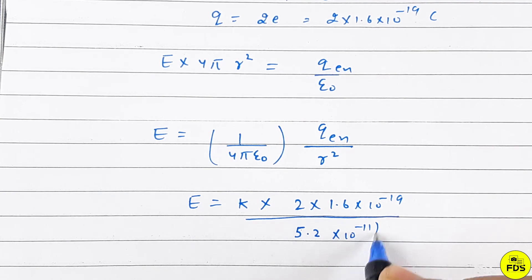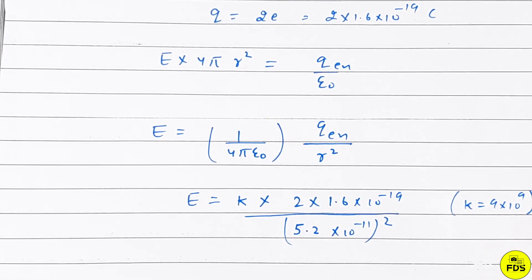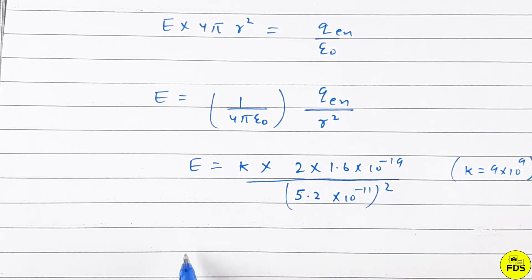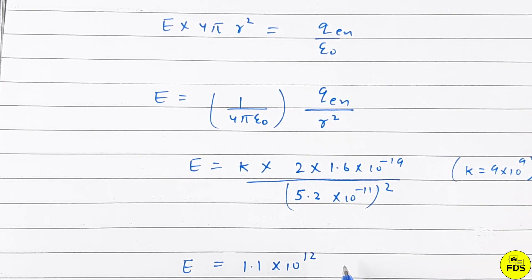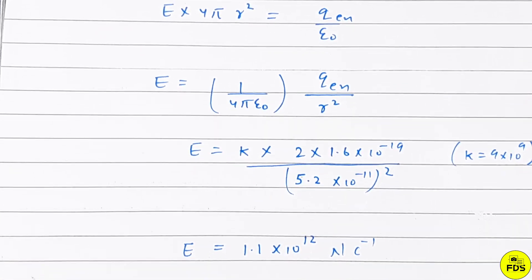K value is 9 × 10^9. When you solve this, the value comes out to be 1.1 × 10^12 Newton per coulomb. So in both parts we've found the electric field values, and that's our final answer.